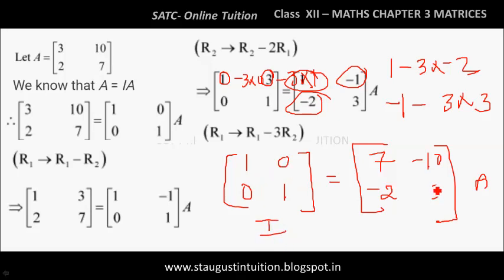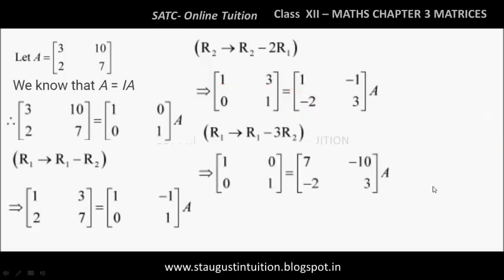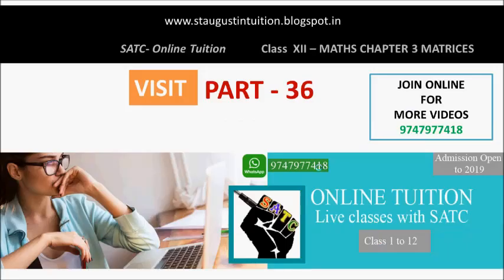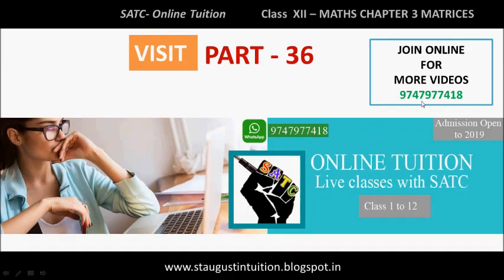So the identity matrix I [1,0;0,1] is achieved. That is your inverse. The answer is: the inverse equals [7, -10; -2, 3]. For online tuition, please WhatsApp 9747977418. Please visit Part 36 for the next problem. Thank you.